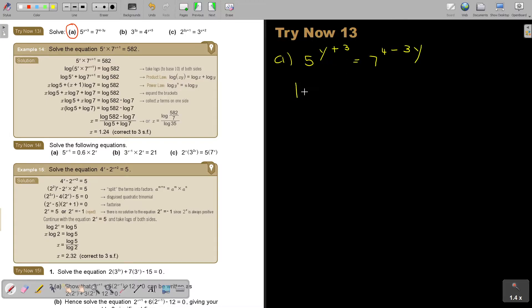Now I take logs on both sides. So it's log 5 to the Y plus 3—you can even put a bracket there already—and log 7 to the 4 minus 3Y. Now I do the power log. I bring it down to the front. So with a bracket: Y plus 3 times log 5 equals bracket 4 minus 3Y times log 7.